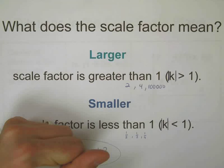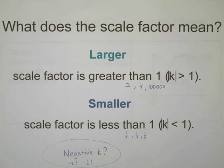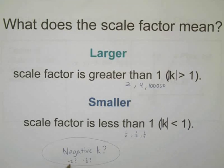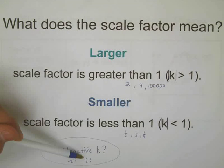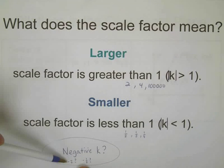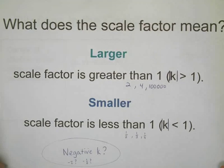What happens if we get a scale factor of like a negative two? What about a negative one half? We're going to see how that k value comes into effect with the negative here in just a second. What we're going to see is that it not only makes it bigger or smaller, but it's also going to do some flipping upside down. A little bit of rotation involved as well.